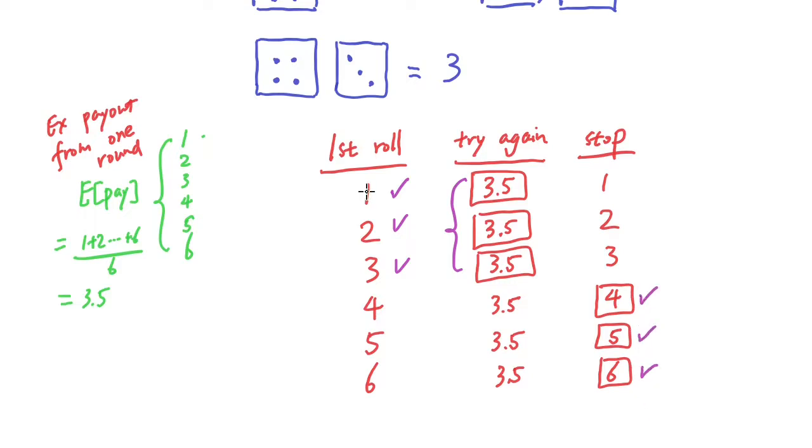So each of the events, each of the row here have 1/6 probability of happening. So the expected payout is basically going to be 1/6 times 3.5 for the first row rolling a 1, plus 1/6 times 3.5 for the first row equal to 2, 1/6 times 3.5 when you got a 3, and then 1/6 when you get a 4, 1/6 when you get a 5, 1/6 when you get a 6. If you add up all this, the final expected outcome is going to be 4.25.